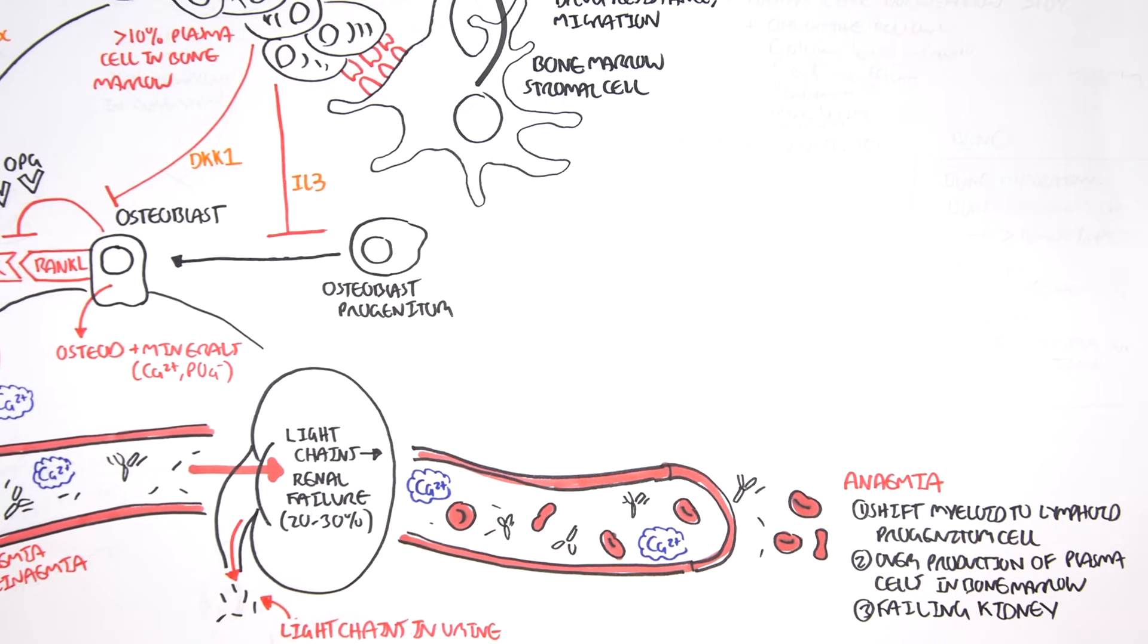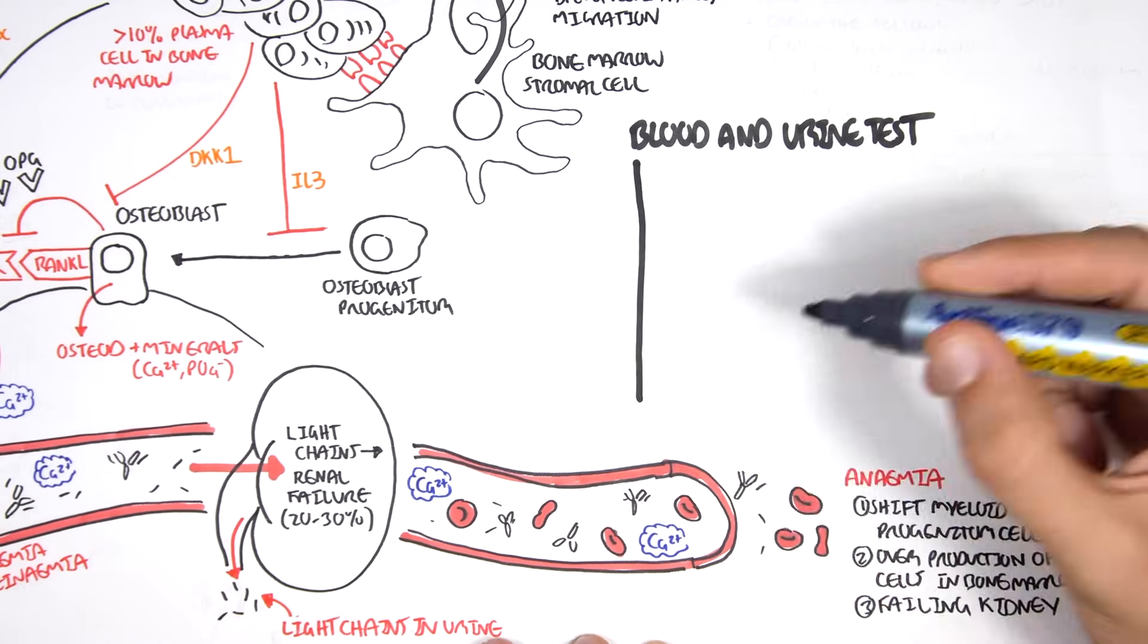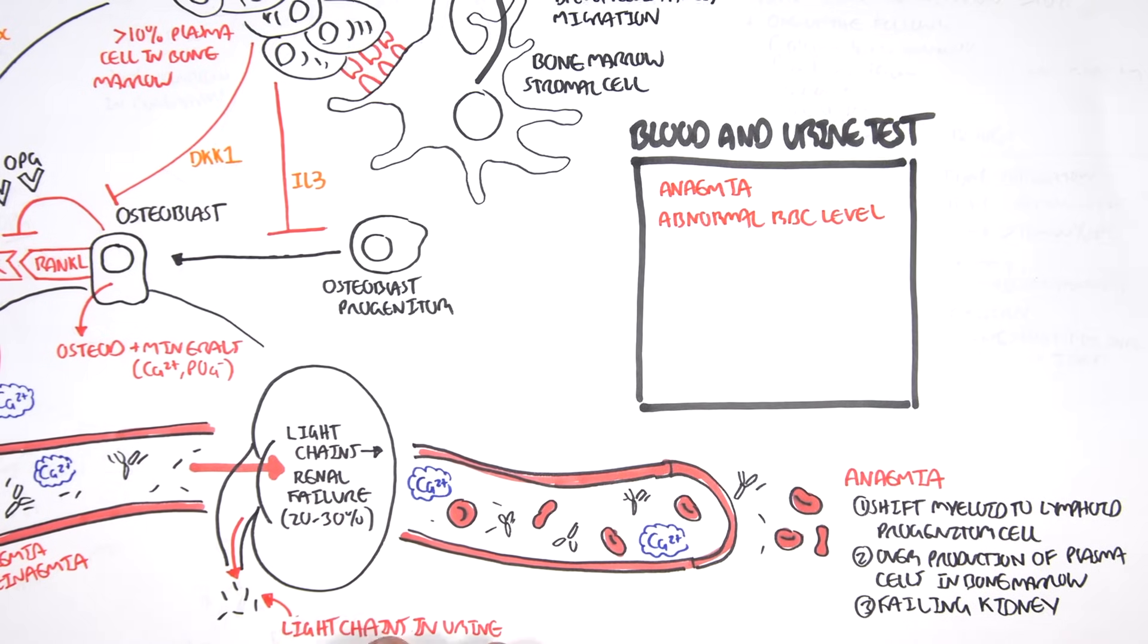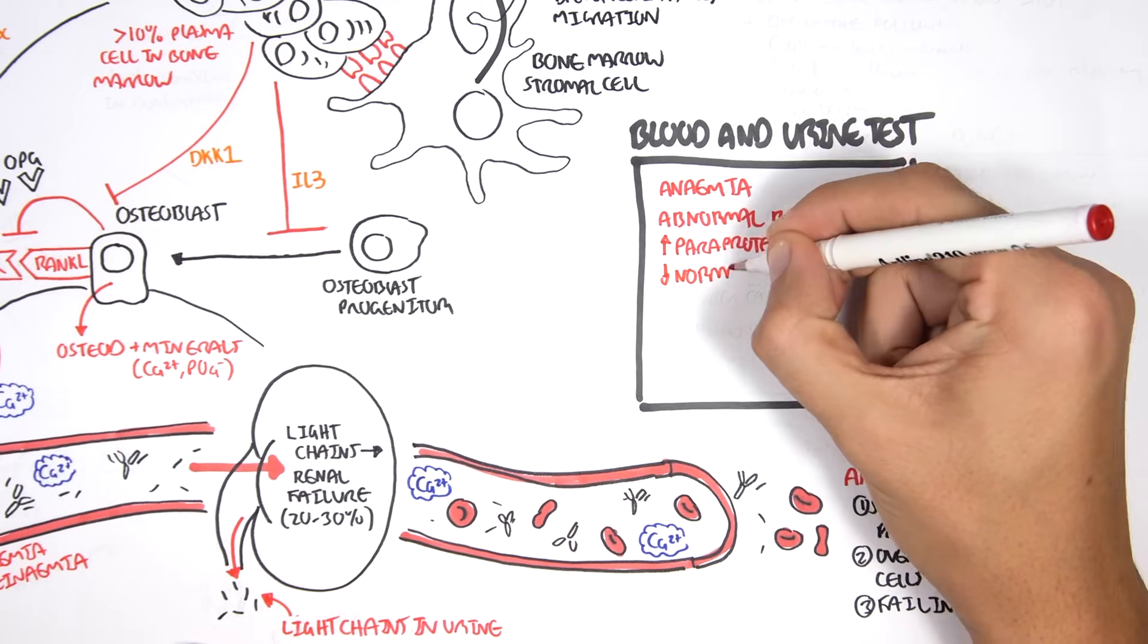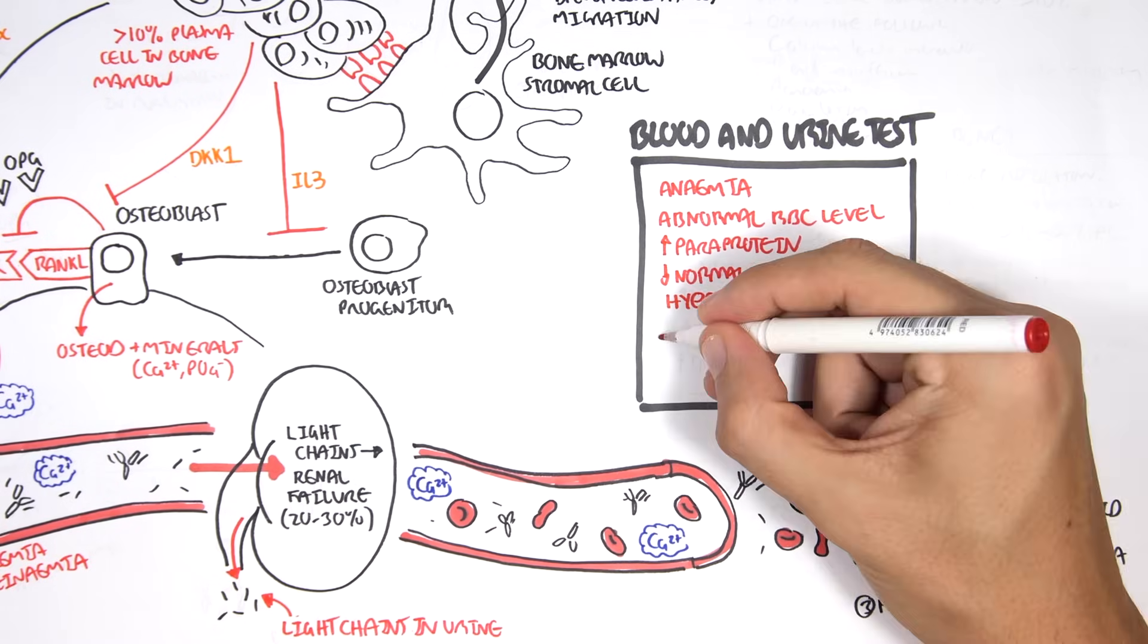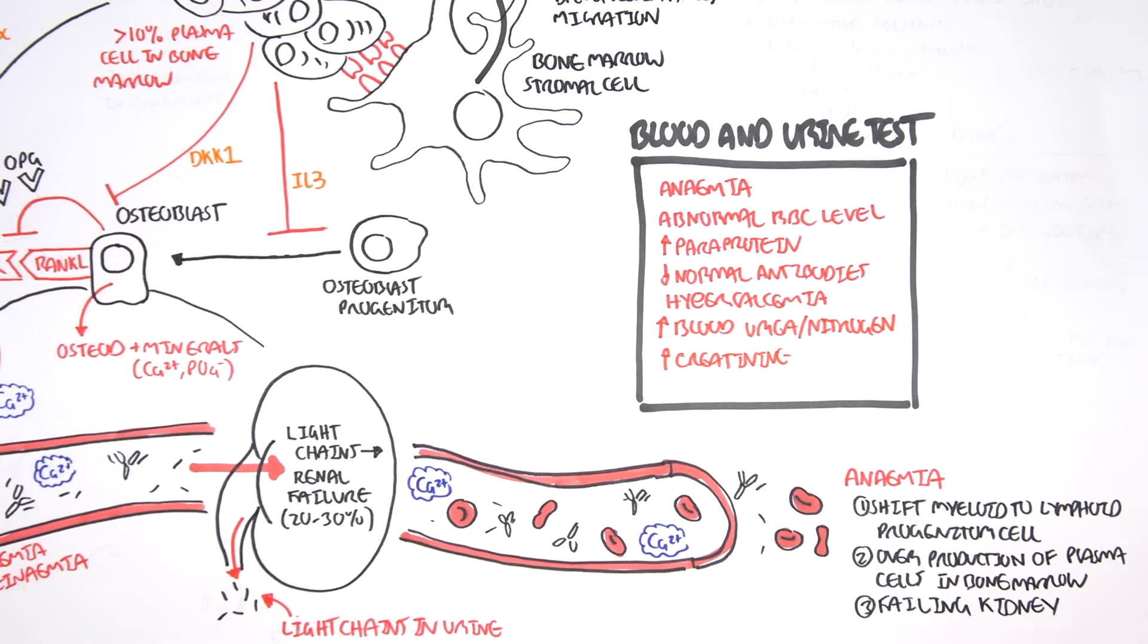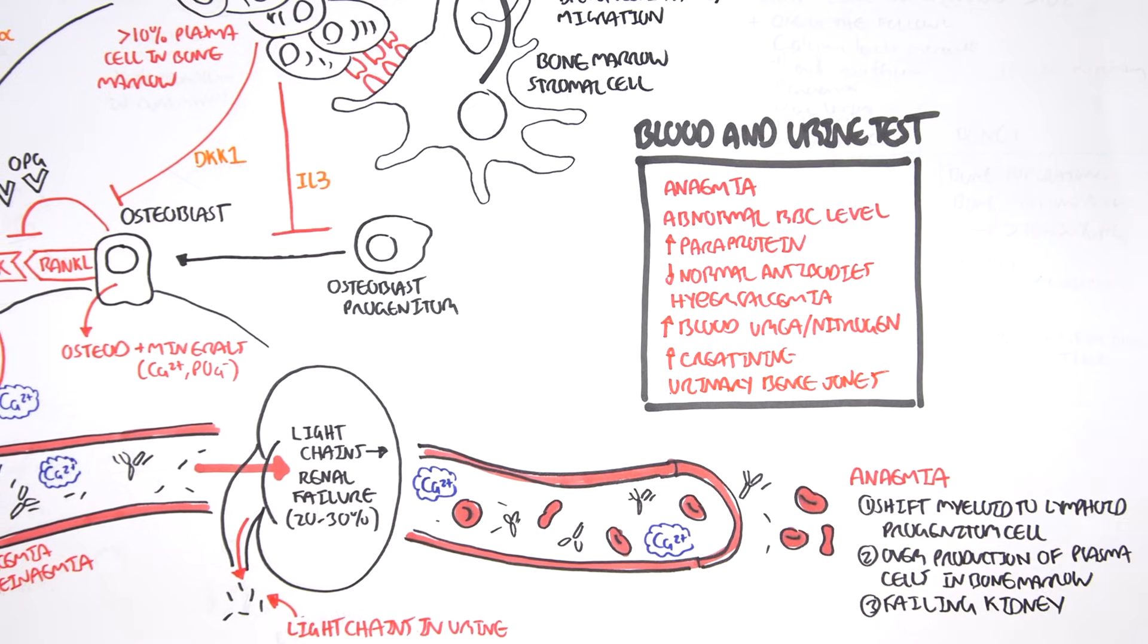There are many investigations that can be performed in multiple myeloma to rule out other problems and to confirm that it's multiple myeloma. These investigations include blood and urine tests. In the blood test, we can detect anemia as a result of abnormal red blood cell level. We can see an increase in paraproteins, paraproteinemia, a decrease in normal antibodies. We see hypercalcemia as a result of increased breakdown of bone. We see increase in urea and nitrogenous bases as a result of renal failure, as well as an increase in creatinine, which is a measure of renal competency. Urine tests show urinary Benz Jones proteins, which are the light chains that are peed out.